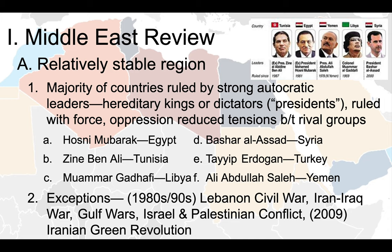The result is a lot of tensions in the region, but this strong-armed way of ruling really puts a lid on those tensions. As we've seen with our reading about Iraq, tensions don't really have space to grow because these leaders are oppressing them so much — as seen in countries from North Africa: Egypt, Tunisia, Libya, as well as in the Arabian Peninsula.